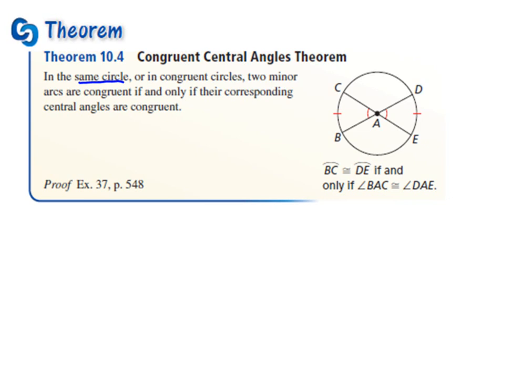Two minor arcs are congruent if and only if their corresponding central angles are congruent. So this is the example of the same circle, and their central angles are congruent. Therefore, the arcs are also congruent.